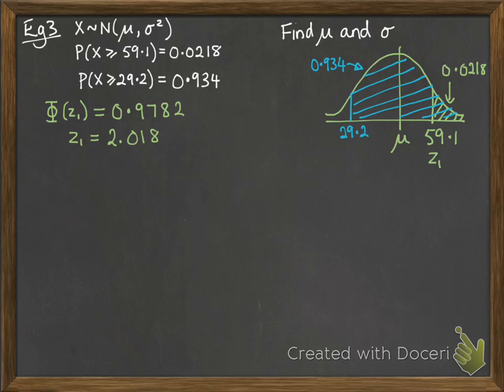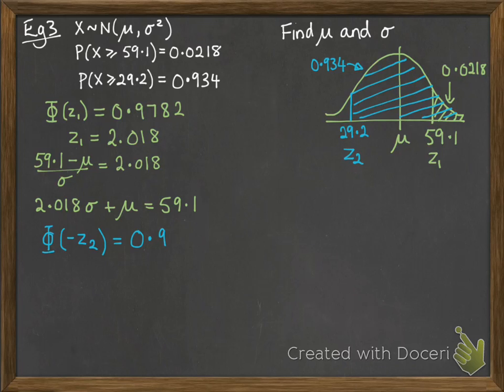Then we put in our transformation formula so that we can get an equation out of it. And we've got sigma and mu. We're going to need another one like that to be able to solve it simultaneously. So we use this other value, the blue stuff. And phi of minus z2 will be 0.34.